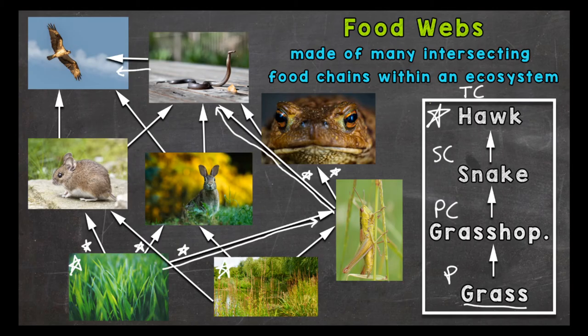That specific food chain has four trophic levels. A food chain does not have to have four trophic levels — it can have more or it can have less.